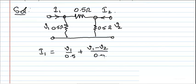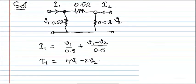This simplifies as I1 equals 4V1 minus 2V2. Now we need to apply KCL at the second node.